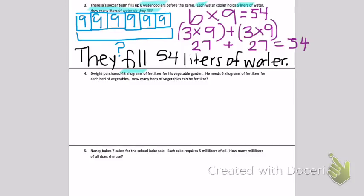So I have 48 kilograms total of fertilizer. He needs 6 kilograms for each of his beds. I have a total, again, of 48 kilograms. And I know that each bag can hold 6 kilograms.